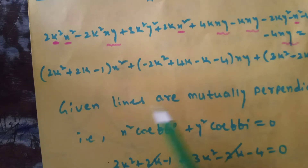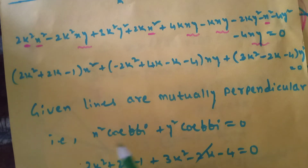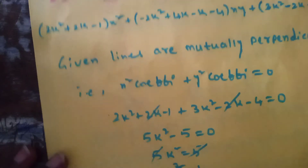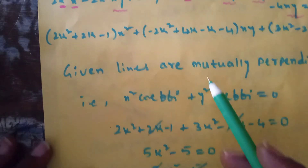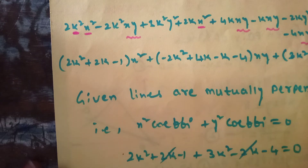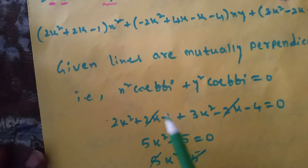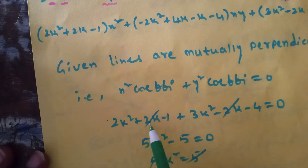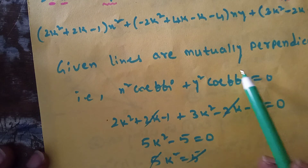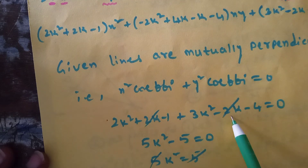Since the given lines are mutually perpendicular, we use the condition that the x² coefficient plus the y² coefficient equals zero. That is: (2k² + 2k - 1) + (3k² - 2k - 4) = 0. The +2k and -2k cancel out.